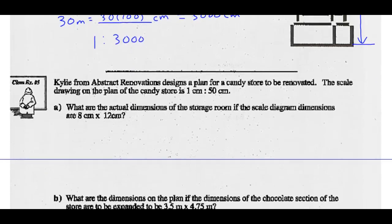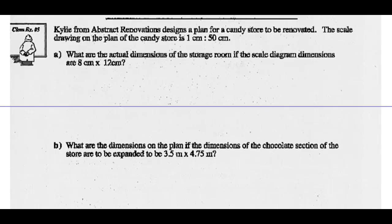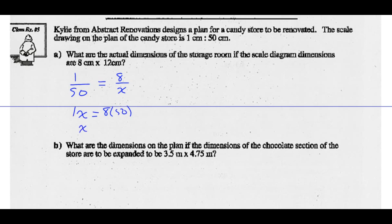Example 5: Kylie from Abstract Renovations designs a plan for a candy store to be renovated. The scale on the plan is 1 centimeter to 50 centimeters. What are the actual dimensions of the storage room if the scale diagram dimensions are 8 centimeters by 12 centimeters? For the 8-centimeter dimension: 1 over 50 equals 8 over x. Cross-multiplying, 1 times x equals 8 times 50, so x equals 400 centimeters.